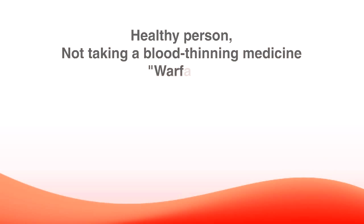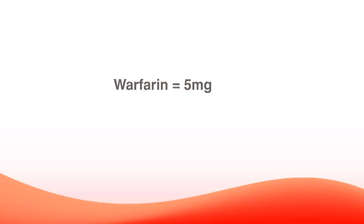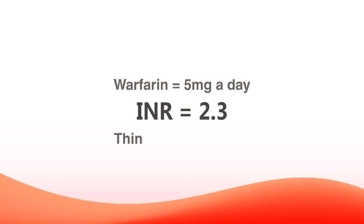The higher the number, the thinner the blood. For example, if I took my INR, it's probably equal to 1 because I'm not on any blood thinners. But if I measure somebody's INR who is taking, let's say, warfarin 5 milligrams a day, their warfarin will make their blood thinner, so their INR might be 2.3. And that 2.3 means their blood is thinner than the average person's.